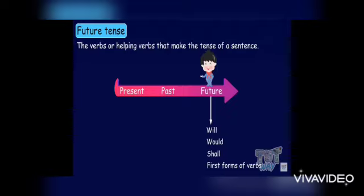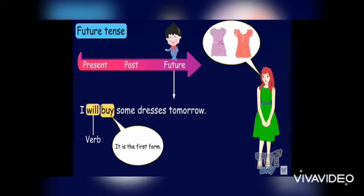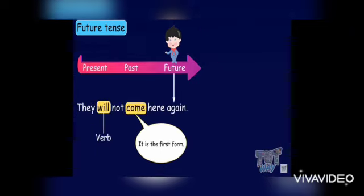The verbs or helping verbs that make the tense of a sentence in future are: will, would, shall, followed by the first form of verbs. For example: 'I will buy some dresses tomorrow' — 'buy' is the first form. 'They will not come here again' — 'come' is the first form.